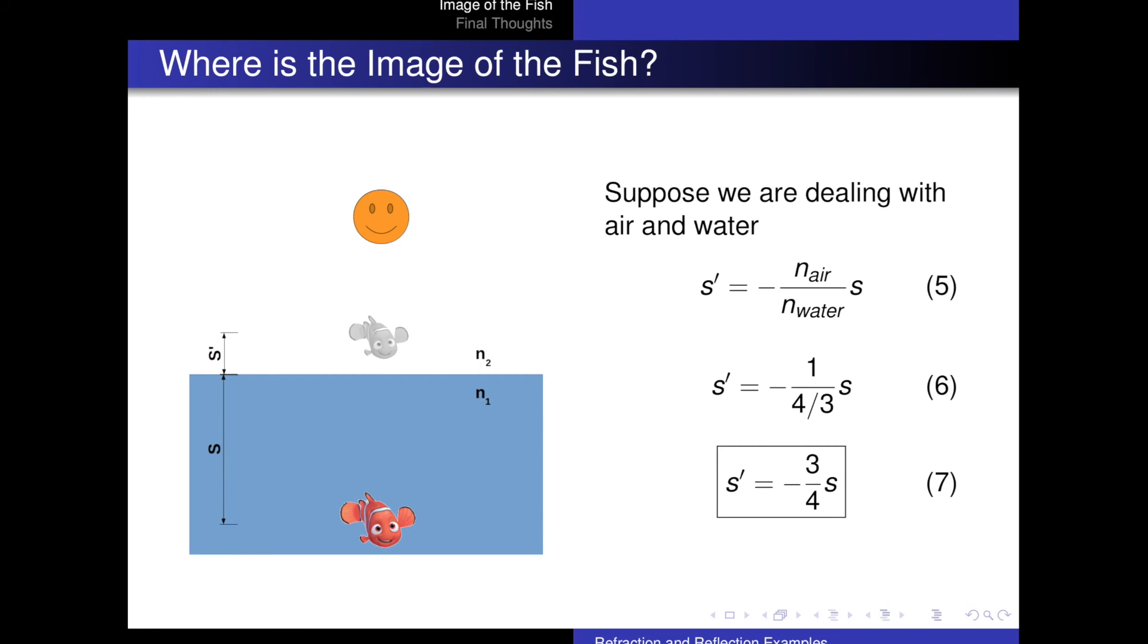So what does that mean? It means the image is below the surface of the water, as we expect in real life. And it's about 3 quarters of the way down. The fish is a little bit deeper than what you expect.